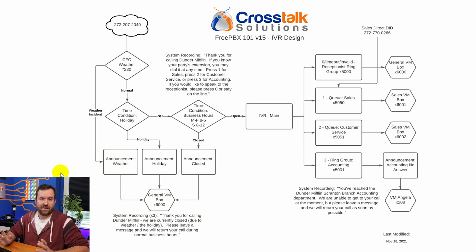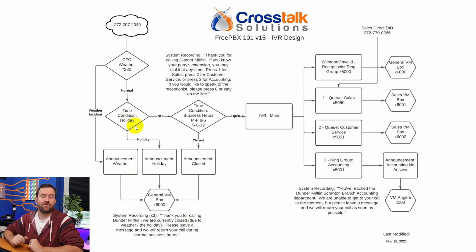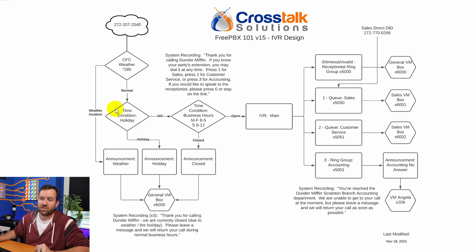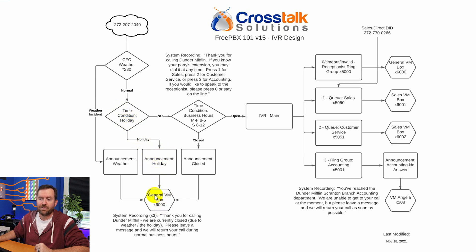Under normal circumstances, when there is no weather incident, calls are going to flow straight through this CFC and into the first of two different time conditions. The first set of time conditions is to determine if we are in a holiday or not — so 4th of July, Thanksgiving, or whatever holidays we might happen to have on our calendar. We're going to check if today is a holiday, and if it is, we're going to go to a holiday announcement and then dump into that general voicemail box.